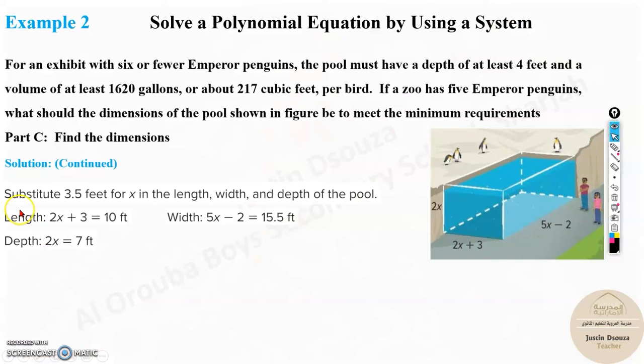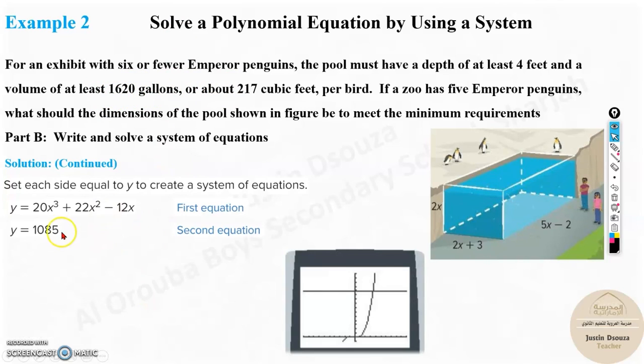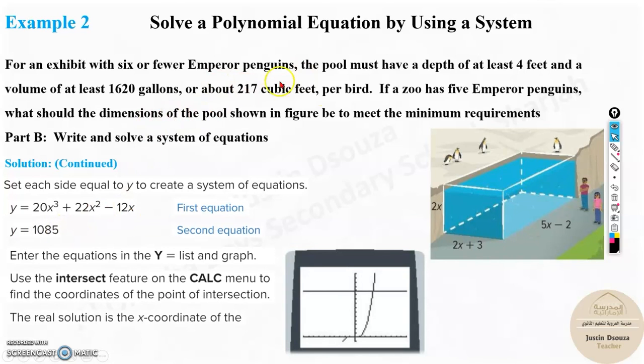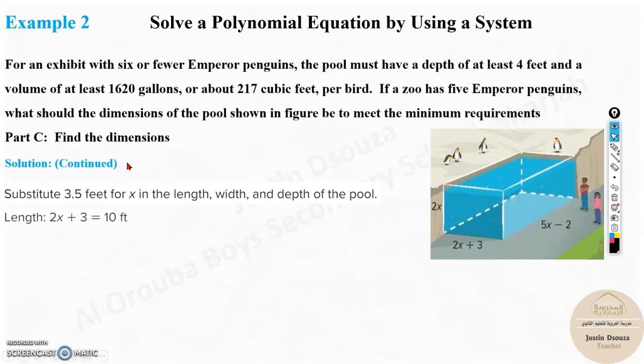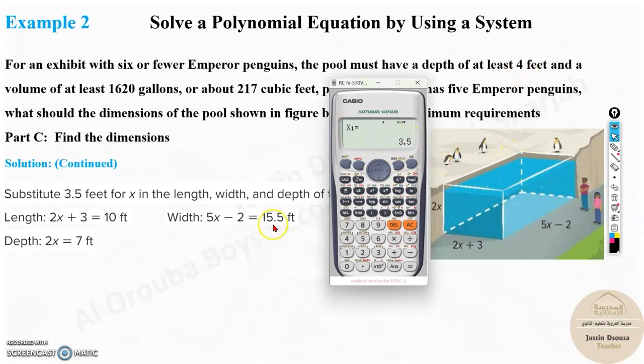Now do check over here. Is the depth at least 4? Yes, it is absolutely more than 4 feet. Now if you convert the gallons, you will know we got 1,085 cubic feet. That is more than 1,620 gallons. So it is above the minimum requirement. Yes, these are the dimensions. Please do check for the depth. If at all the depth was less than 4, that wouldn't be the correct answer. You could have tried other values. But in this case we have only one correct answer, so this must be your exact answer. So these are your dimensions.